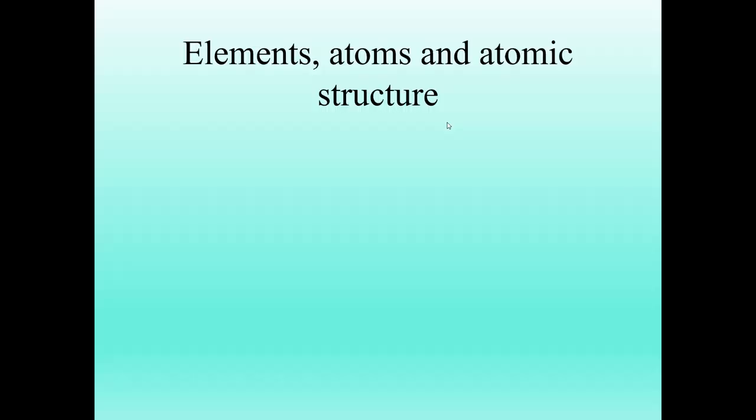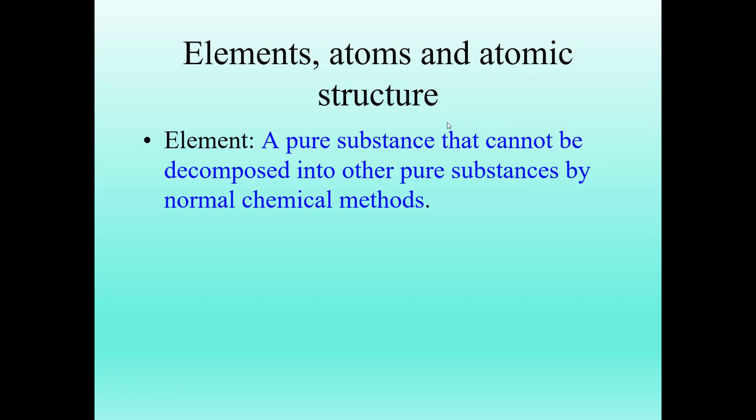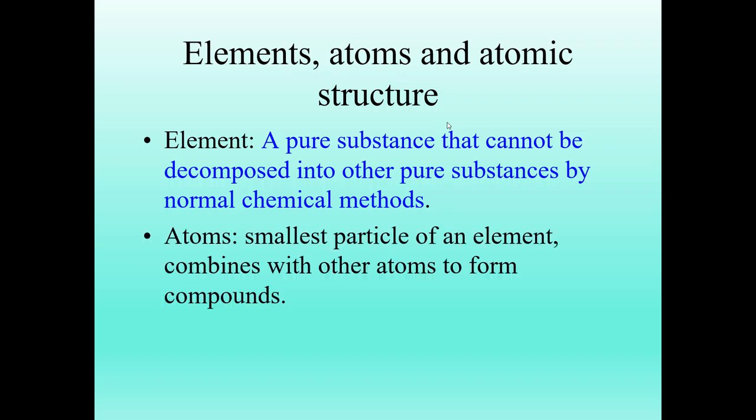But before we can talk minerals, we got to talk the very basics. So let's go back to chemistry class here and talk elements, atoms, and atomic structure. So first of all, an element is any pure substance that cannot be broken down farther by any natural or chemical means. So these are those little symbols on our periodic table. Those are elements. An atom, however, is the smallest particle of an element. It combines with other atoms to form a compound. Now we know there are subatomic particles, and we'll talk about protons, neutrons, and electrons, but the smallest functional unit is the atom.